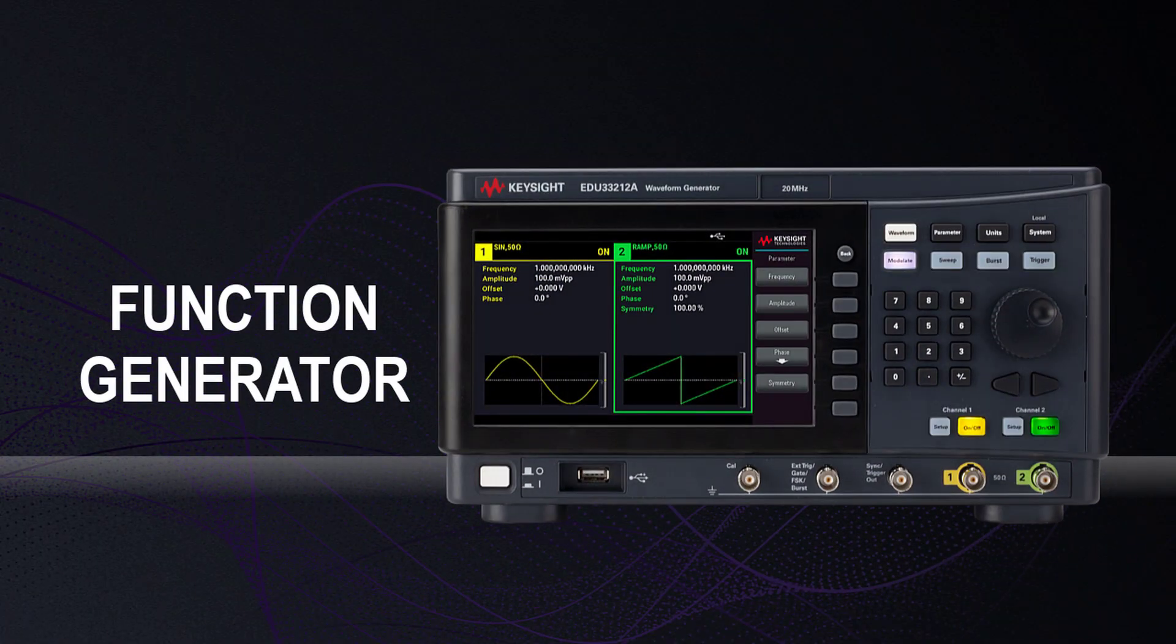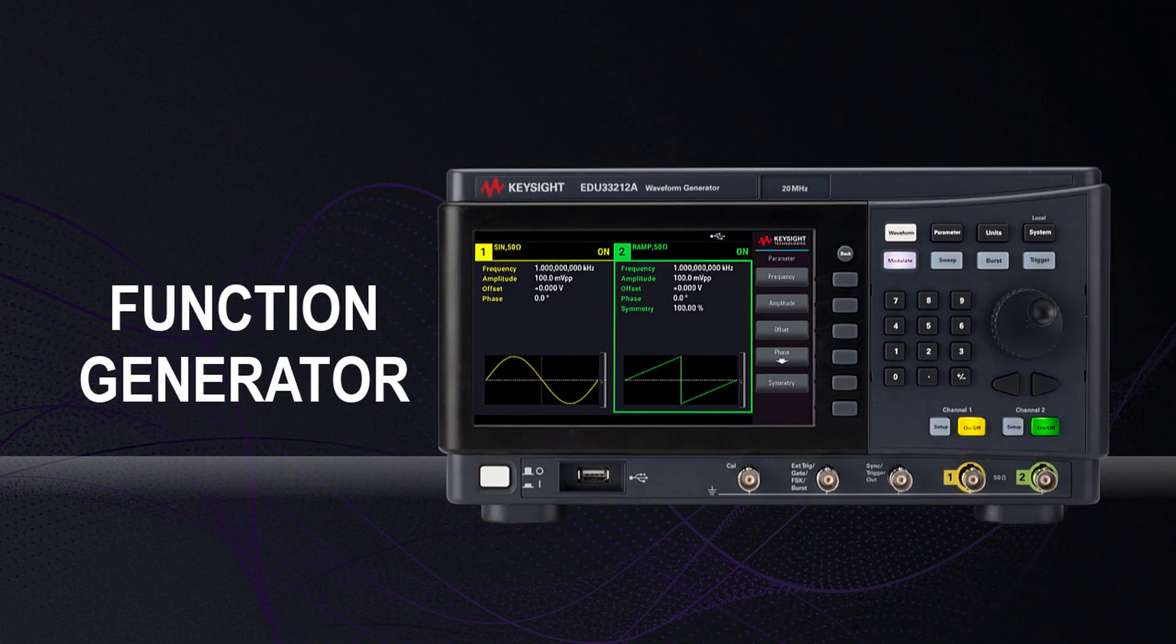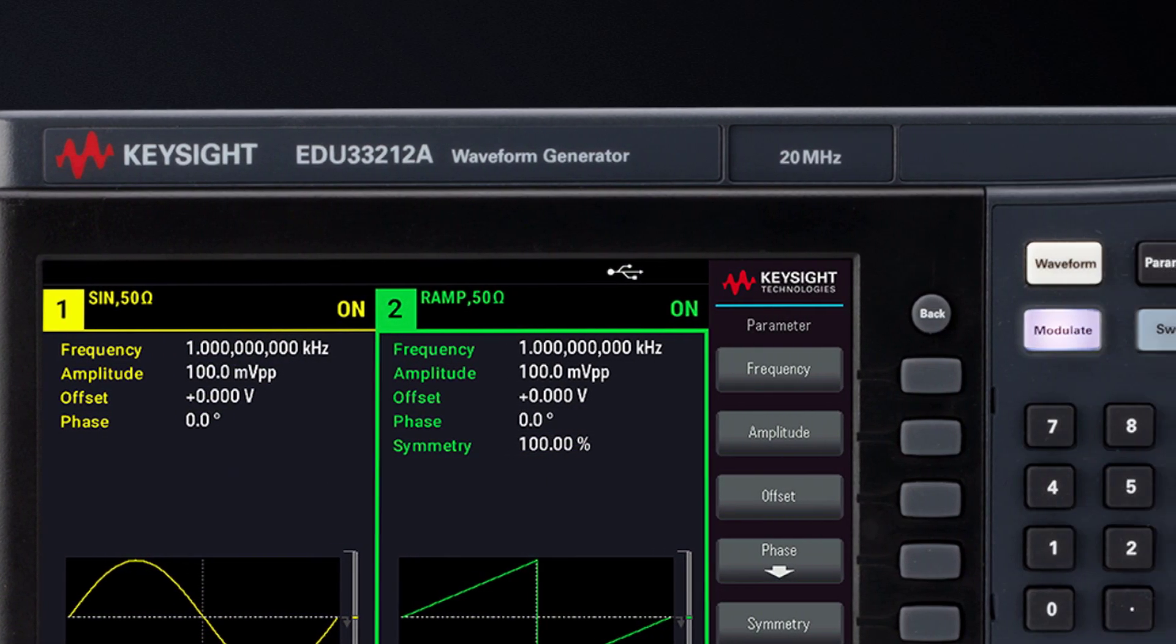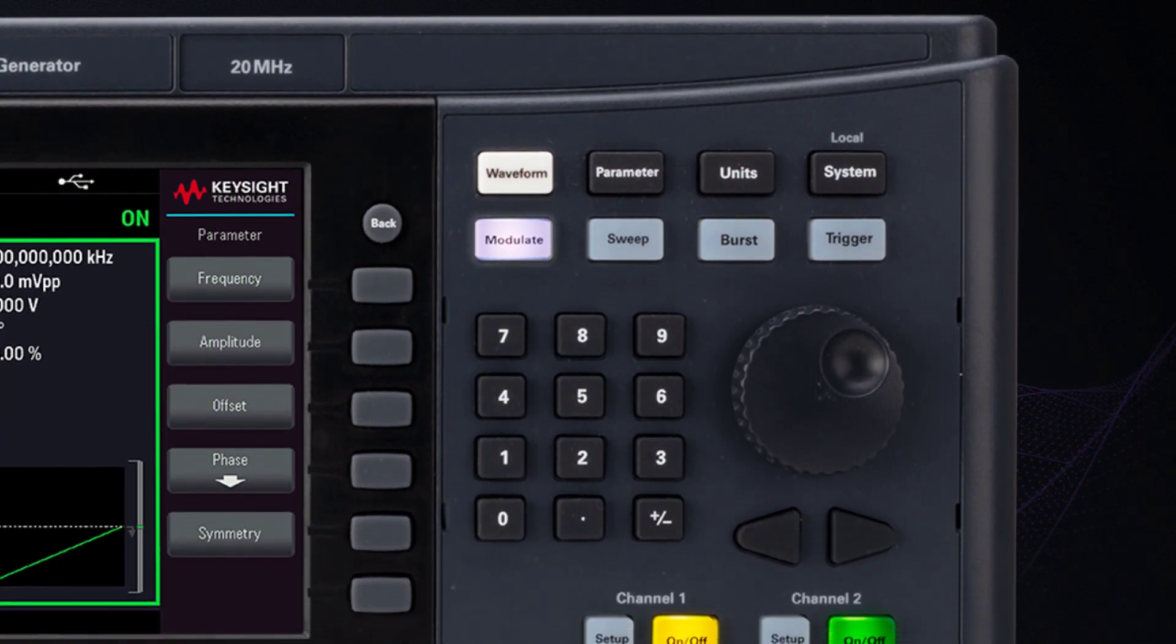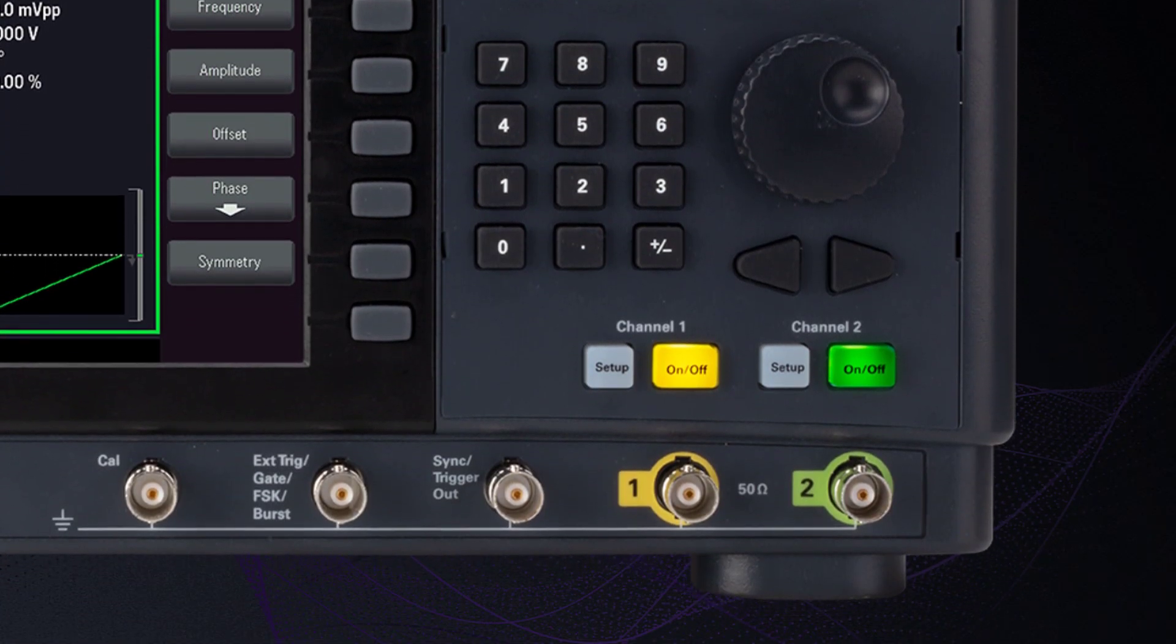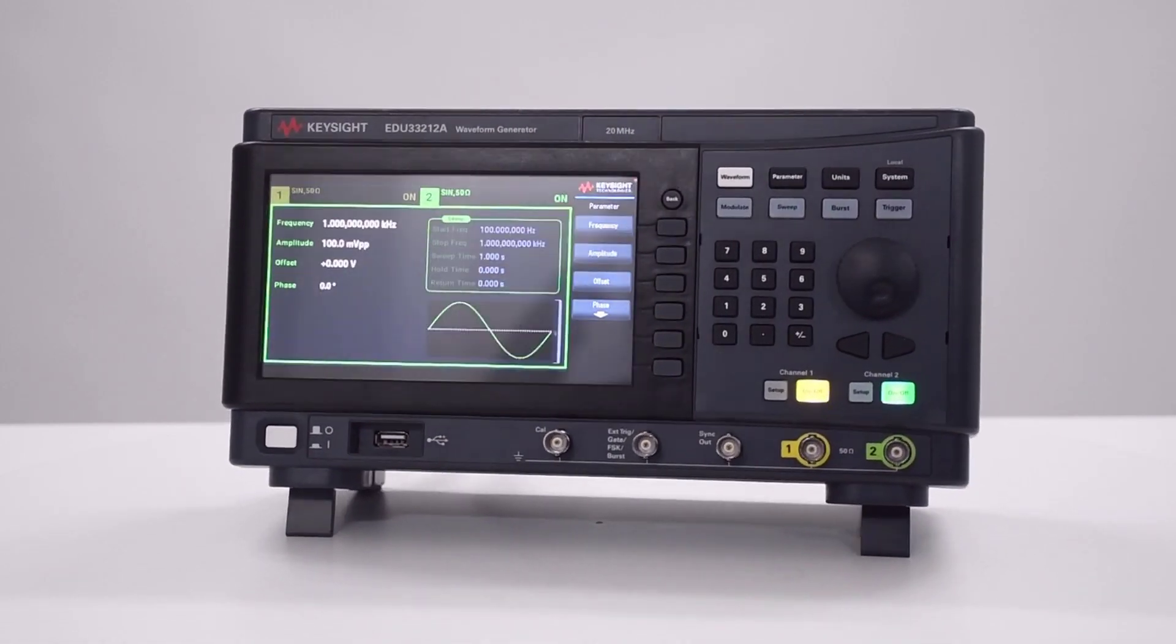The Function Generator offers all the standard signals and features you need today and expect for testing tomorrow's designs. It has 17 built-in arbitrary waveforms and 6 built-in modulations to get you set up and testing immediately.